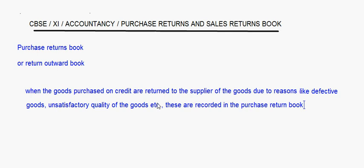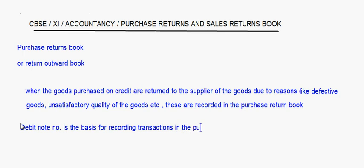The debit note number is the basis on which the purchase returns book is made. Just like in the purchases book and sales book you have an invoice number, here you will have a debit note number on the basis of which we record the entries. For sales return it is the credit note, which I will come to later. So for the purchase returns book, the debit note number is the basis for recording transactions.